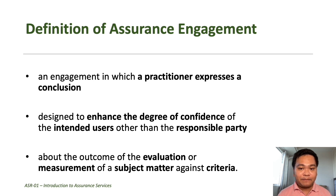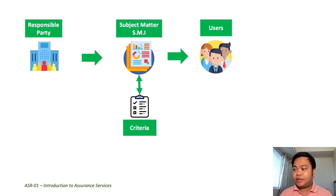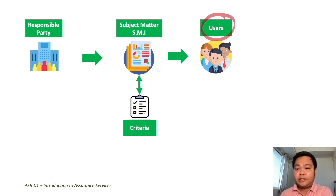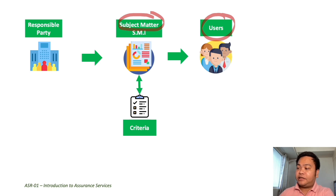To explain the salient features of the definition of an assurance engagement, we will refer to the following illustration. The premise of an assurance engagement is that the decision makers — designated as the users of information — need information about a subject matter. For example, the subject matter could be financial information of a company. Simply stated, subject matter is a source of information, like the financial position and financial performance of a company.